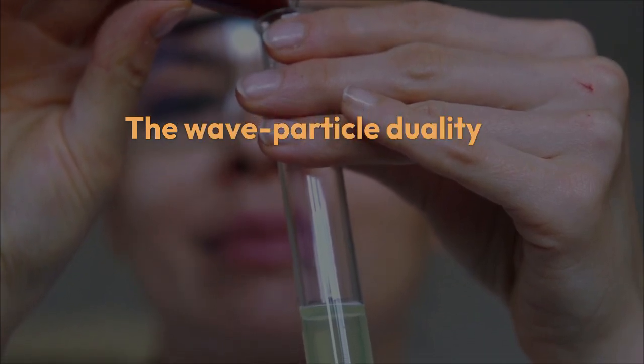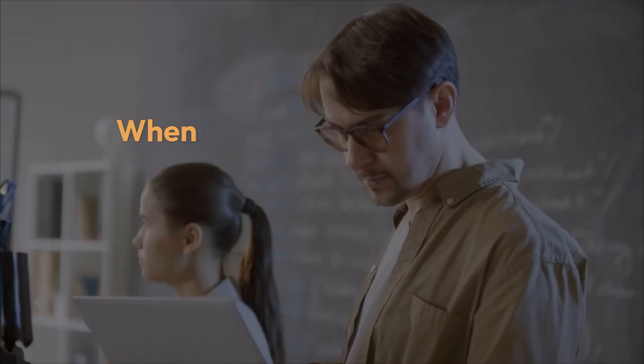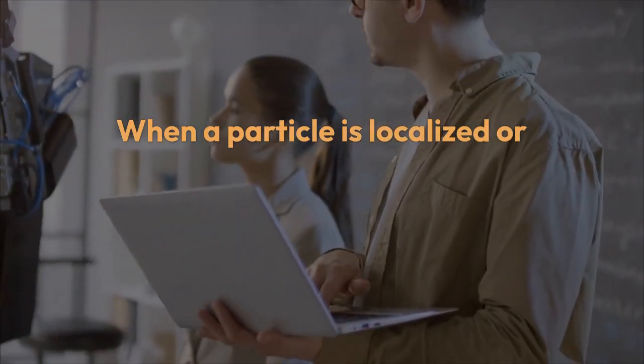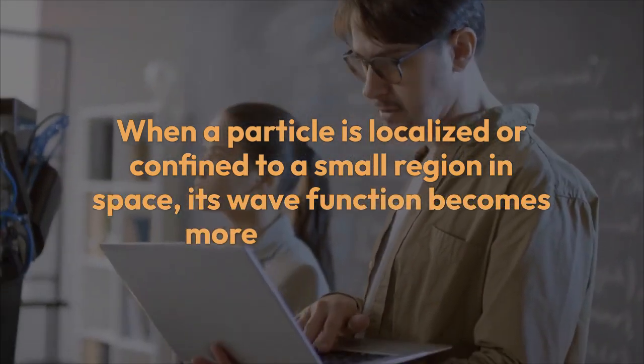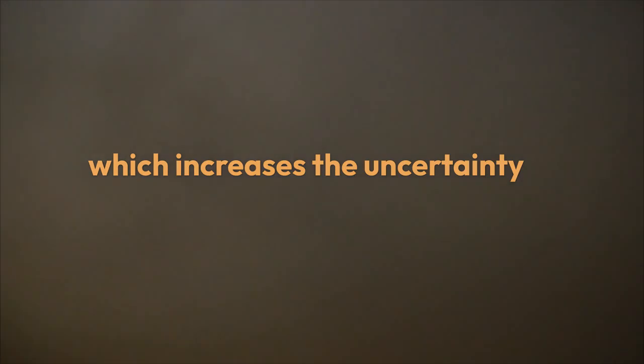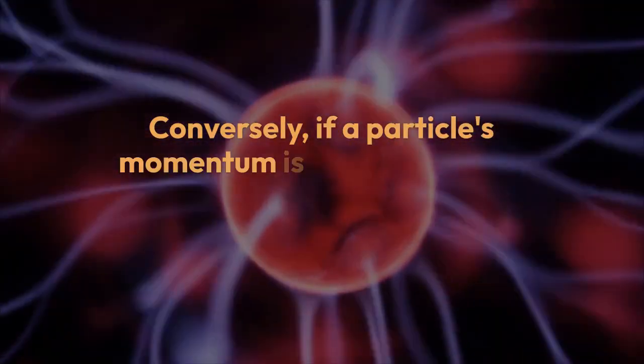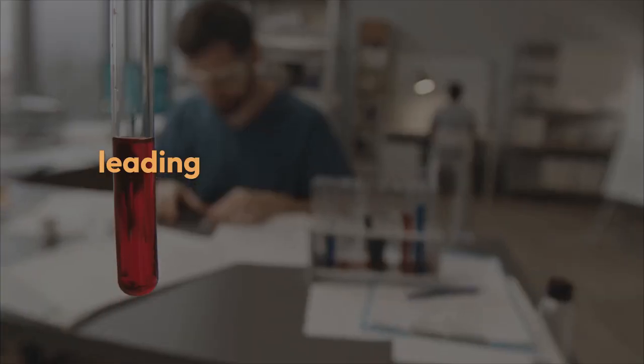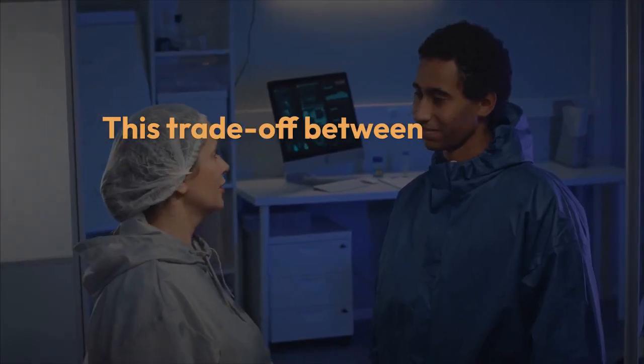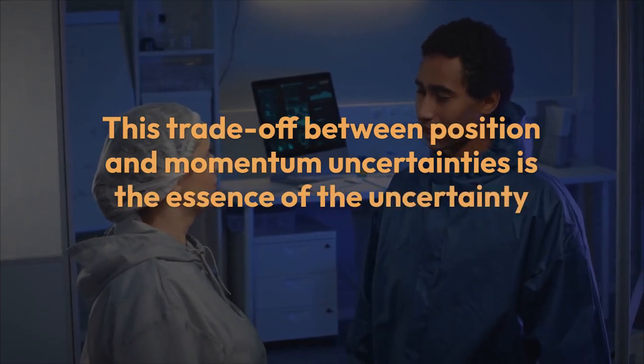The wave-particle duality of matter is central to understanding the uncertainty principle. When a particle is localized or confined to a small region in space, its wave function becomes more concentrated, which increases the uncertainty in its momentum. Conversely, if a particle's momentum is well-defined, its wave function must be spread out over a larger area, leading to greater uncertainty in its position. This trade-off between position and momentum uncertainties is the essence of the Uncertainty Principle.